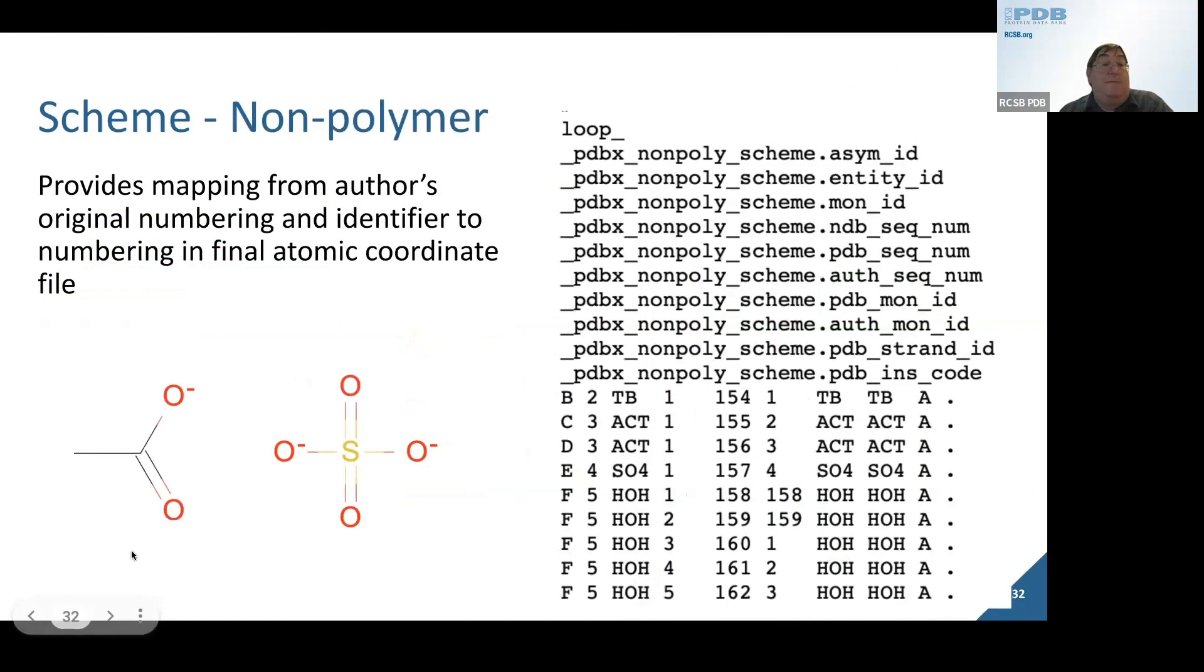We enumerate all the non-polymers with its own separate scheme, where we indicate the author's residue number, which was 154. It was a terbium, and how we represent it. We also represent each polymer chain, each specific separate ligand, with an asymmetric ID, which is used to give you an inventory of the different pieces. We have sulfate and acetate ions in the structure, as you can see here.